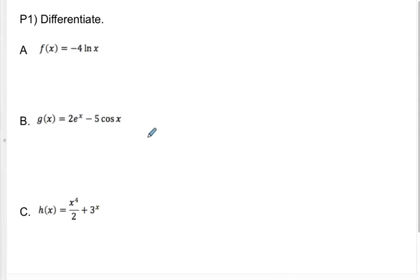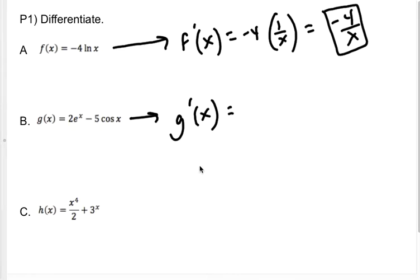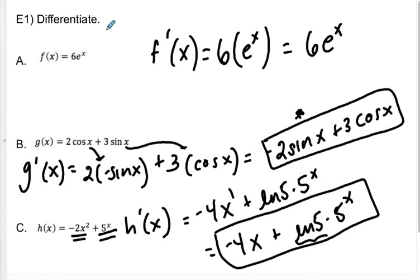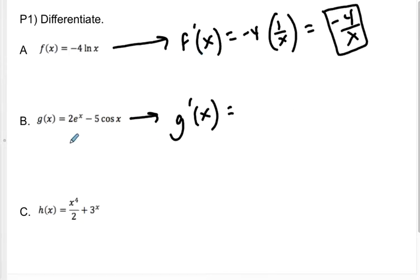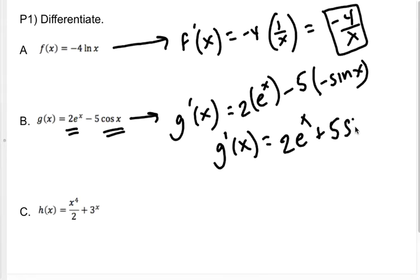Go ahead and give P1 a try. So f prime of x is going to be negative 4 times the derivative of natural log, which is 1 over x, so I get negative 4 over x. For g prime — notice again that g is generally not the same as g prime. I'm going to differentiate 2e to the x, which is just 2 times e to the x, minus 5 times the derivative of cosine, which is negative sine of x. So when I clean this up, my g prime of x is 2e to the x plus 5 sine of x.